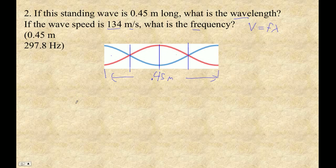So that's easy. If 0.45 meters is 4 quarter wavelengths, then lambda is 0.45 meters. And really, remember,